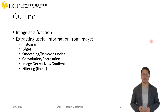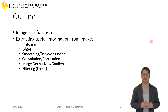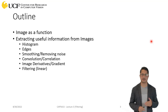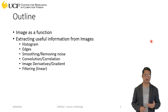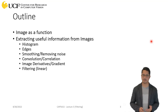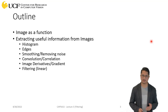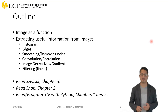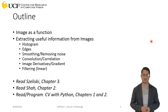We'll cover two important concepts: convolution and correlation, which will be used for filtering and will also come up later when we talk about convolutional networks. Then we'll talk about image derivatives — how we can use them to extract meaningful information from images — and finally some basic examples of filtering.